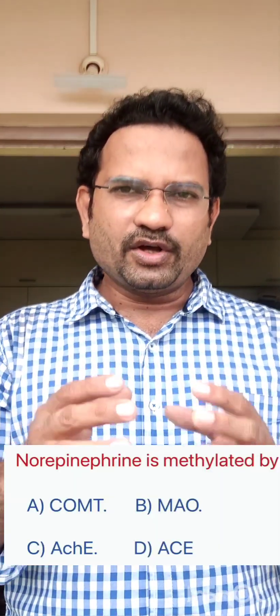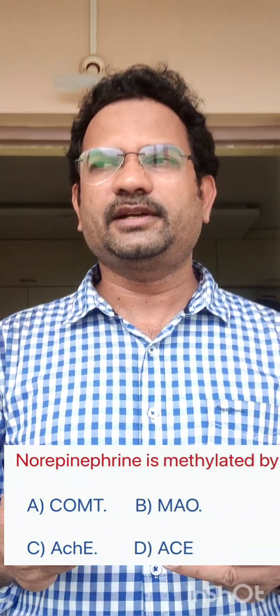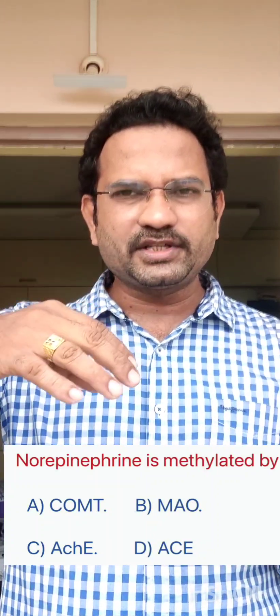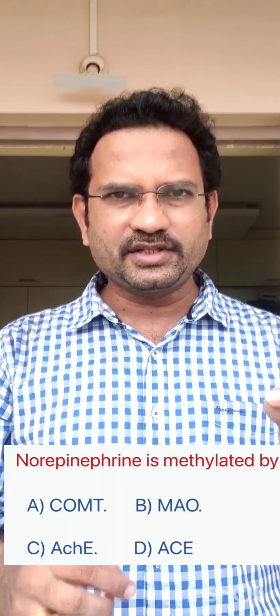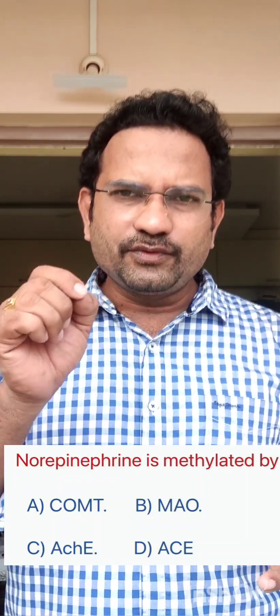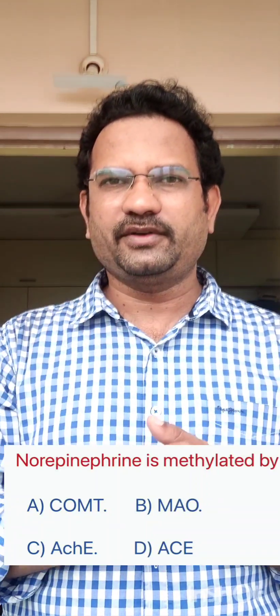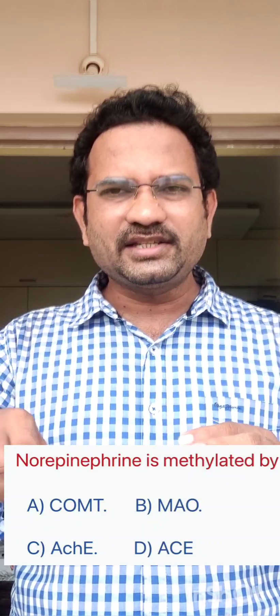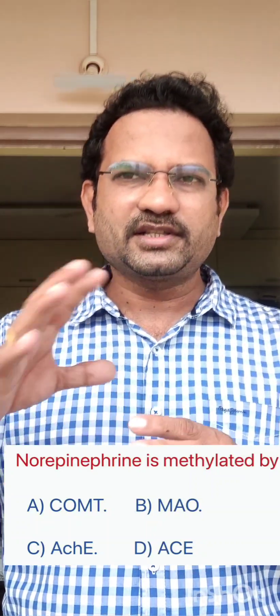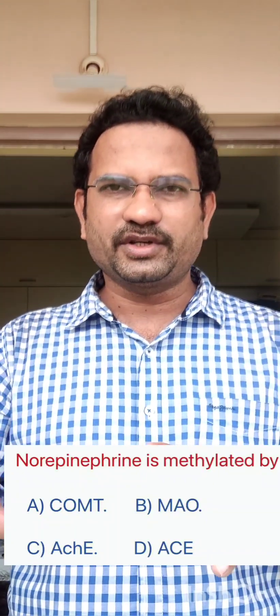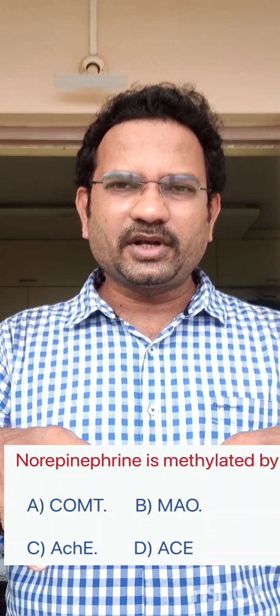The last question: norepinephrine is methylated by? In neurohormonal transmission, norepinephrine is metabolized by two enzymes: monoamine oxidase (MAO) and catechol-O-methyltransferase (COMT). The question asks about methylation, so the answer is COMT — catechol-O-methyltransferase — which methylates norepinephrine. Monoamine oxidase oxidizes the amine group. ACh is metabolized by acetylcholinesterase, and ACE (angiotensin-converting enzyme) is required for angiotensin-2 production. The answer is COMT.